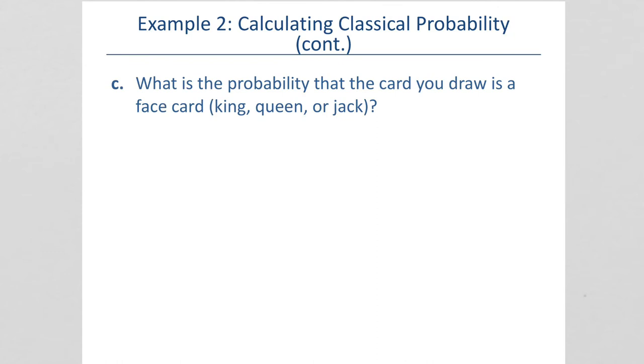What is the probability that the card you draw is a face card? So, let's see. There were three in each suit that were face cards. So, that would be 12. And, that reduces to three-thirteenths. Or, as a decimal, approximately 0.230769.